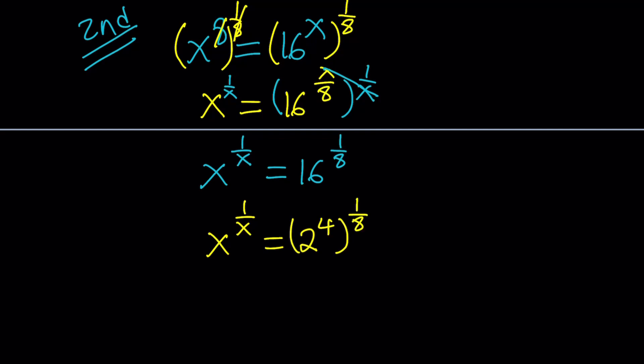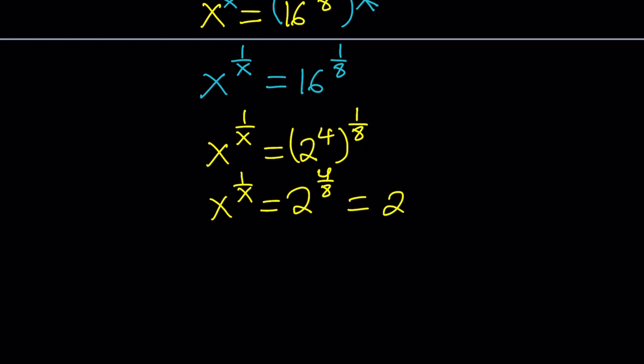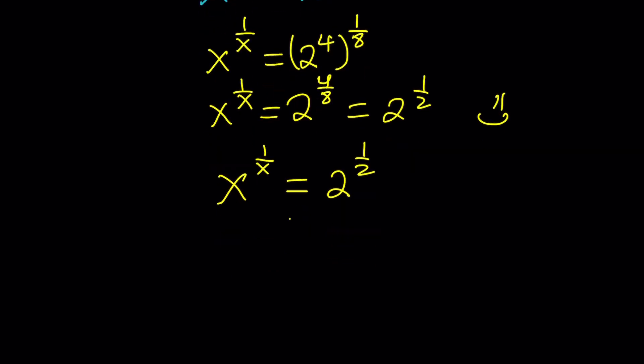We're going to multiply the exponents. That's going to give us 2 to the power 4 over 8, which can be written as 2 to the power 1 half. This is super nice because now I've got the same pattern. x to the power 1 over x equals 2 to the power 1 half. And that's just awesome. Because I can directly conclude that x equals 2 from here.